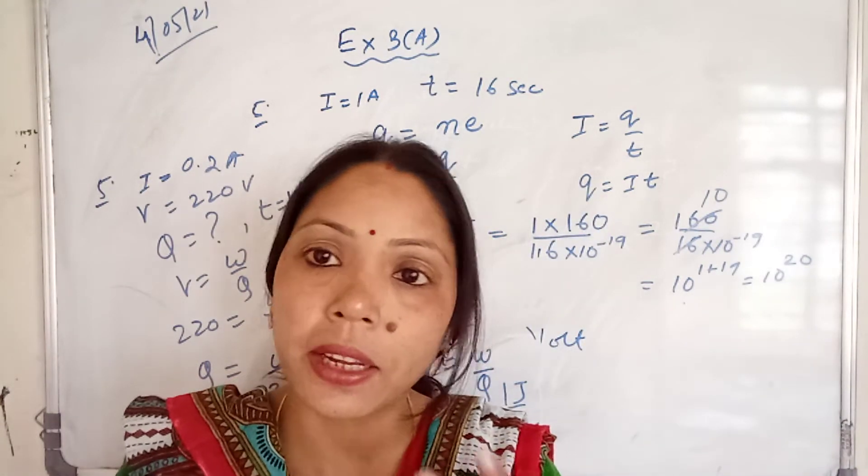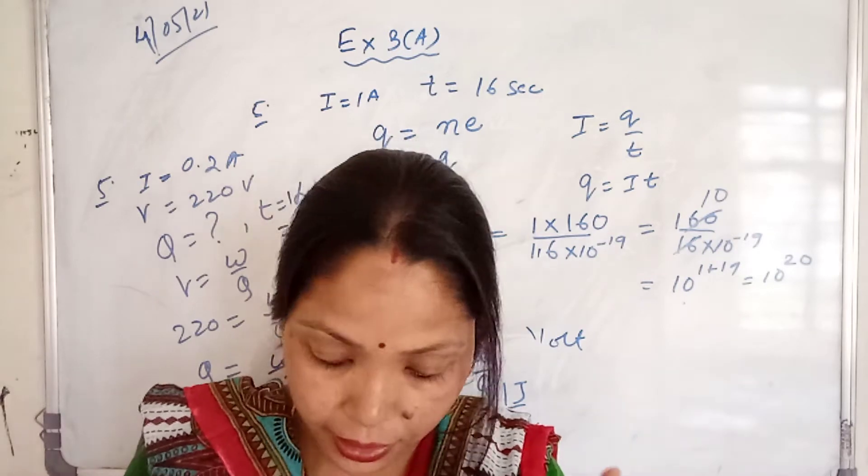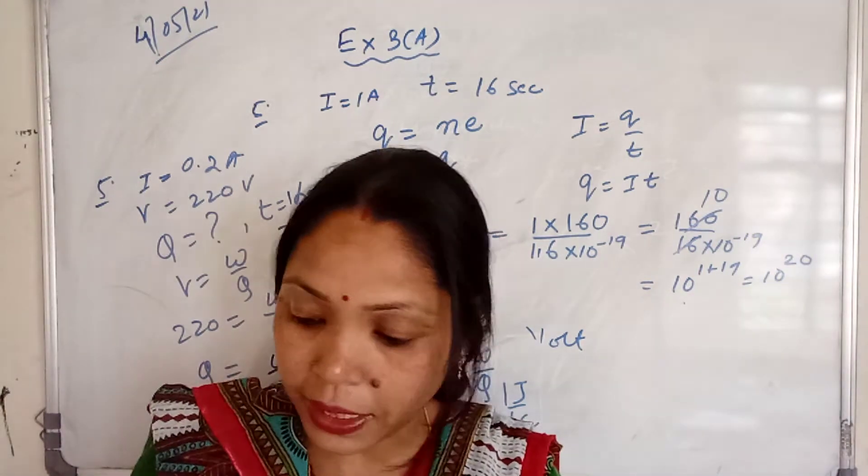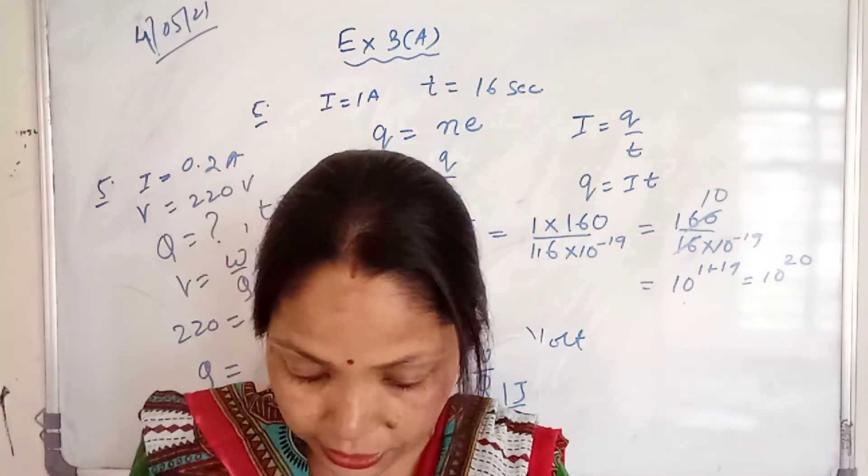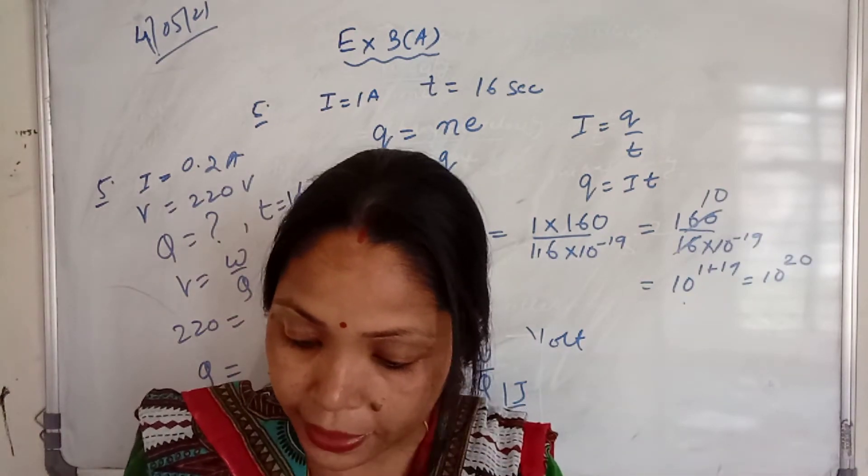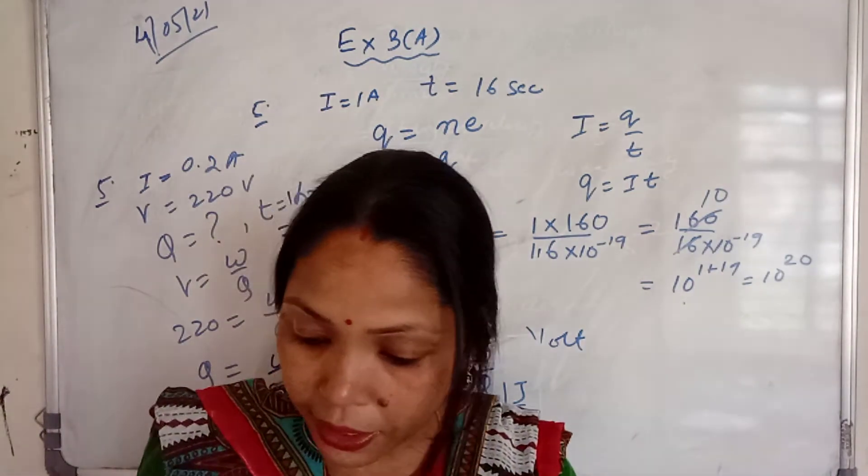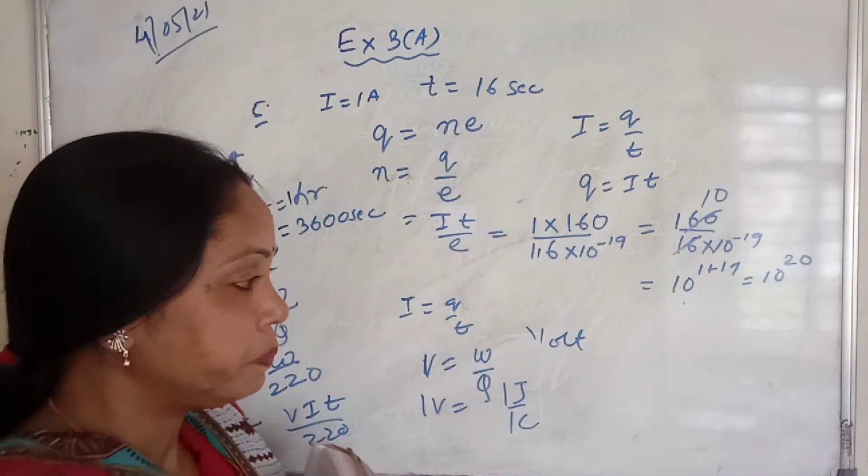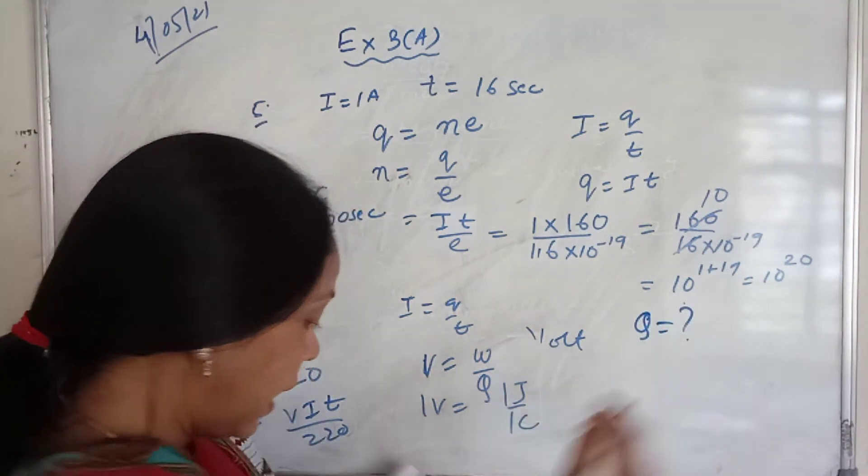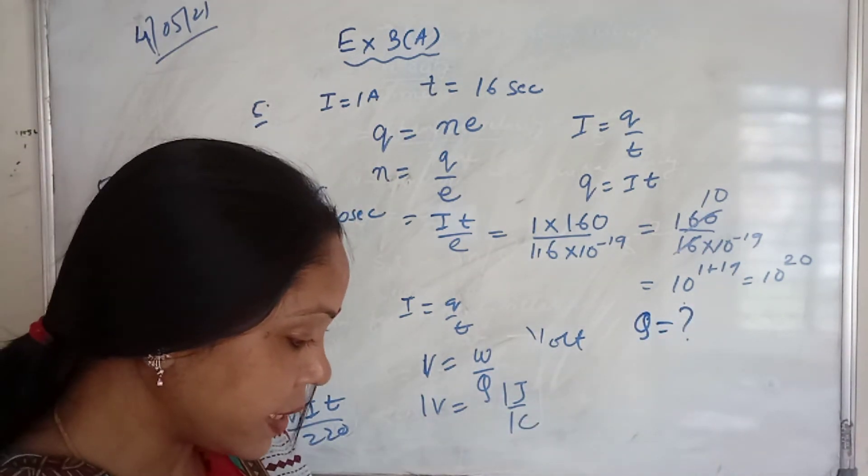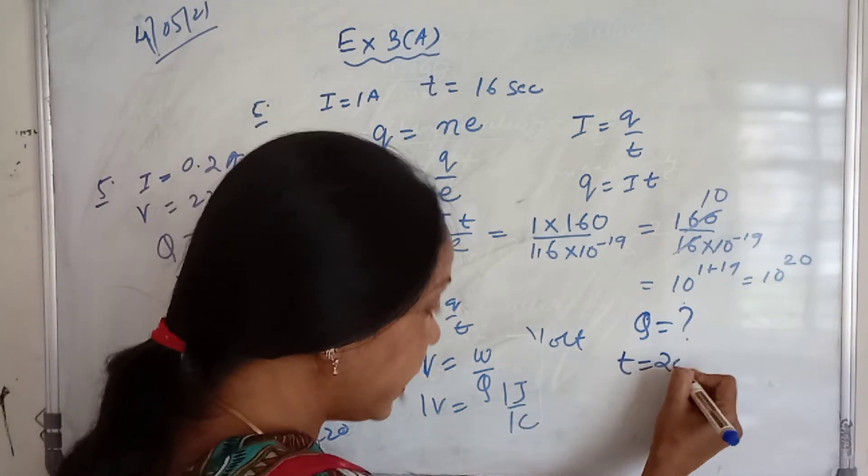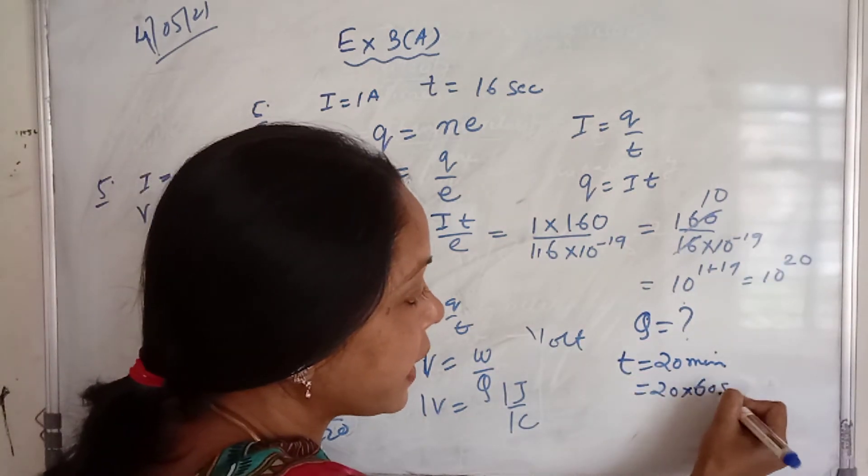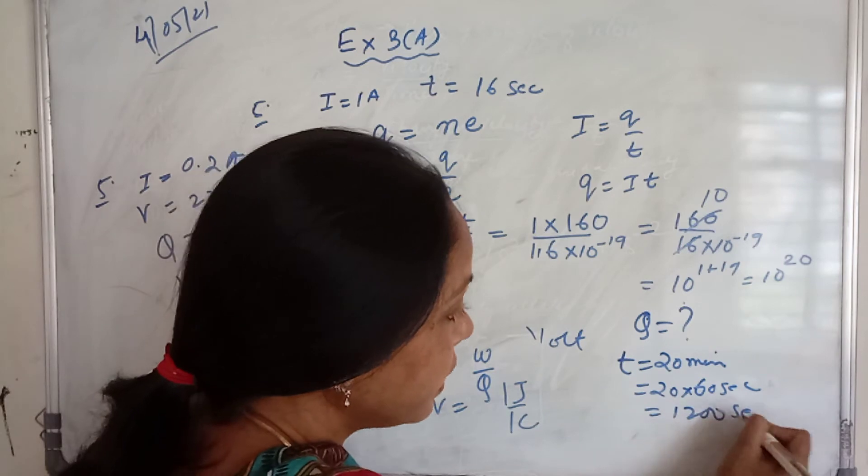Next, define the term coulomb. Again, here you have to write the definition of 1 coulomb. State the relationship between electric current and the charge moving through conductor and the time: I equals Q by T. Calculate the charge passing through an electric bulb in 20 minutes if the value of the current is 20 milliampere. Here you have to find Q. And what is given? Time is given T equals 20 minutes. Convert this one into seconds. So 20 into 1 minute equals 60 seconds, so this comes as 1200 seconds.